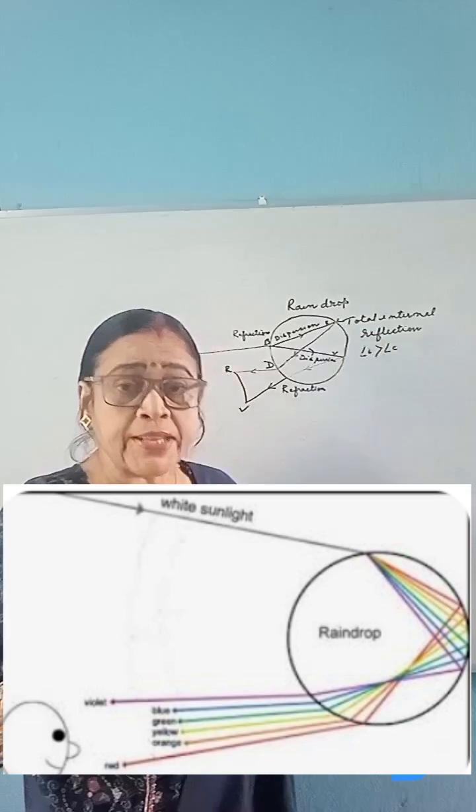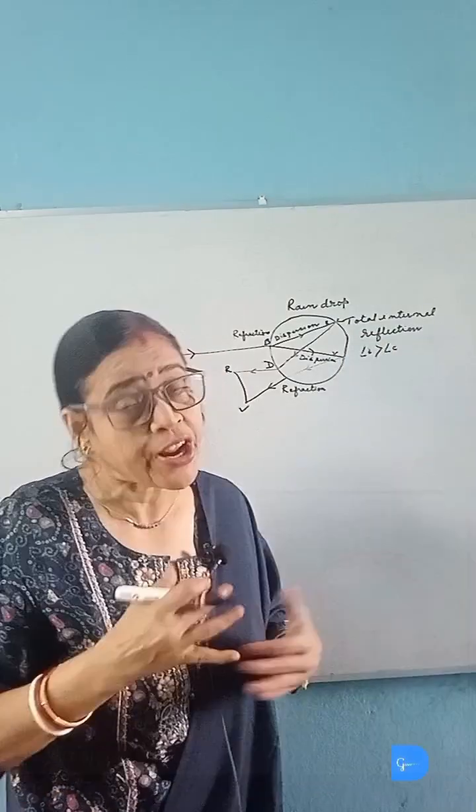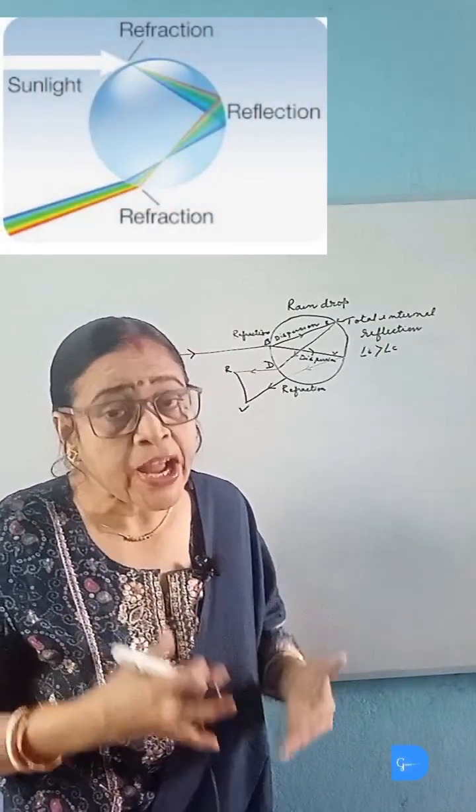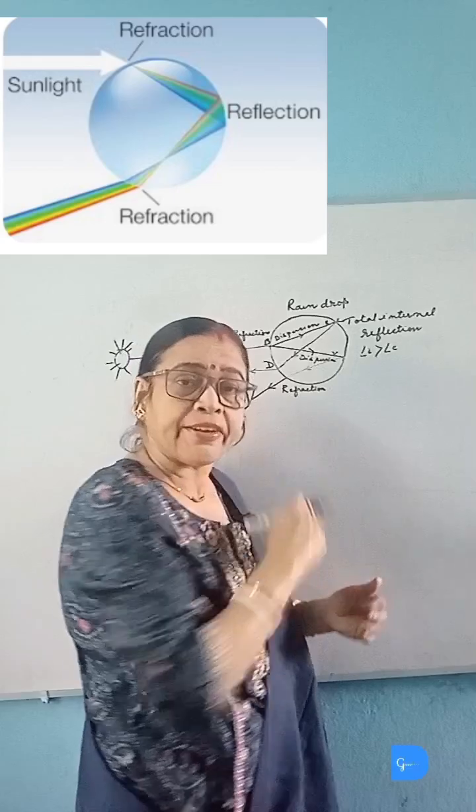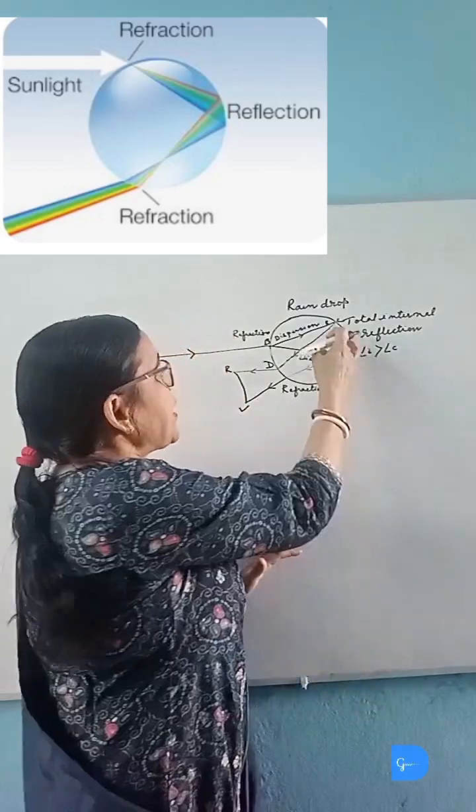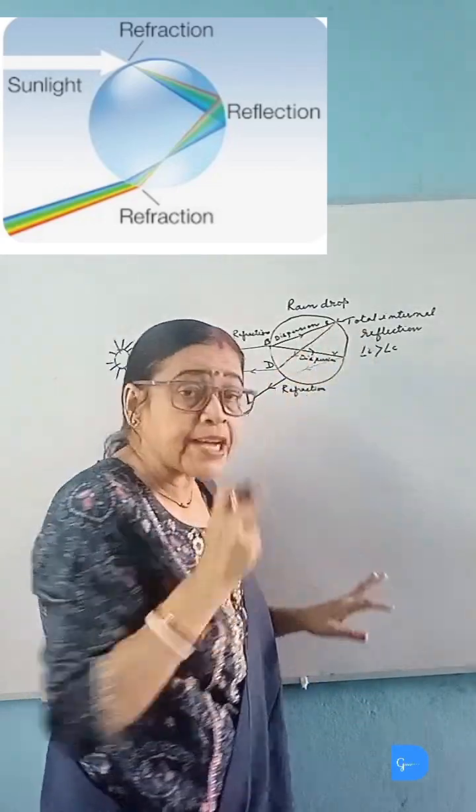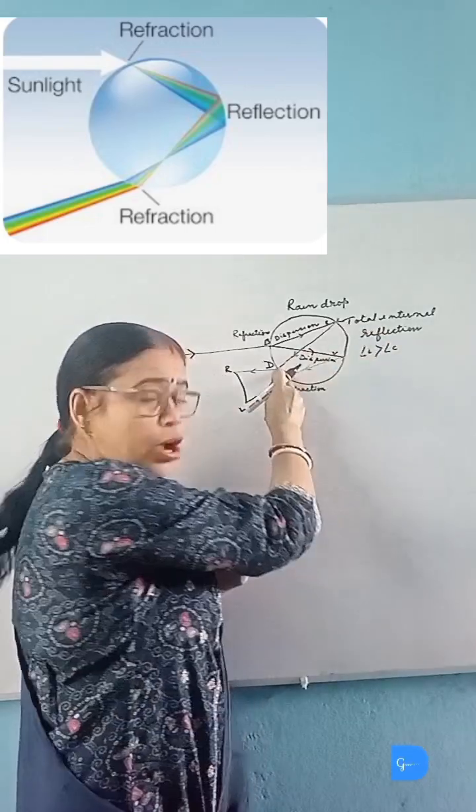When it reaches the other side, the light is traveling from denser to rarer medium and the angle of incidence is greater than the critical angle. So the light undergoes total internal reflection and reaches the starting point.